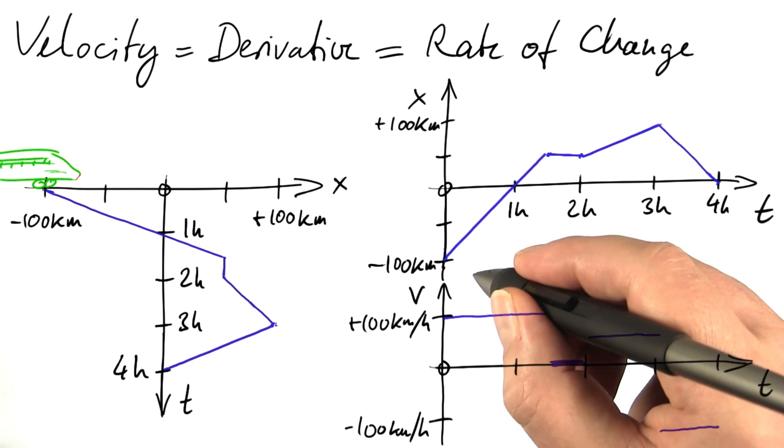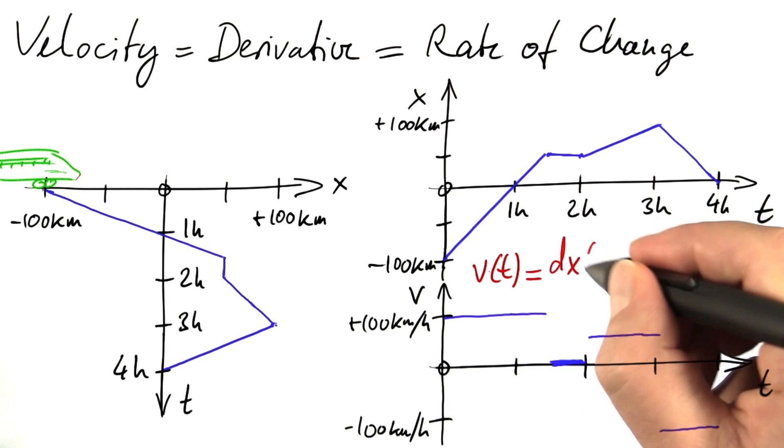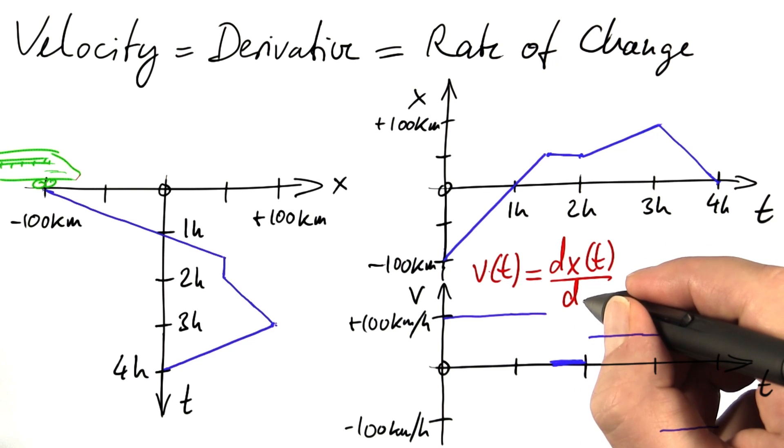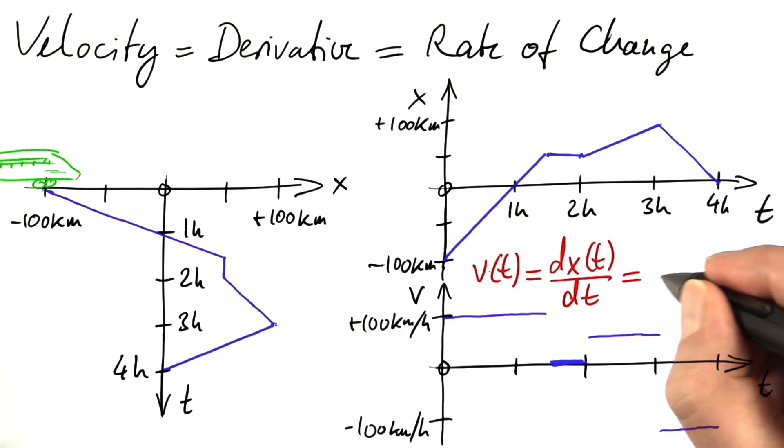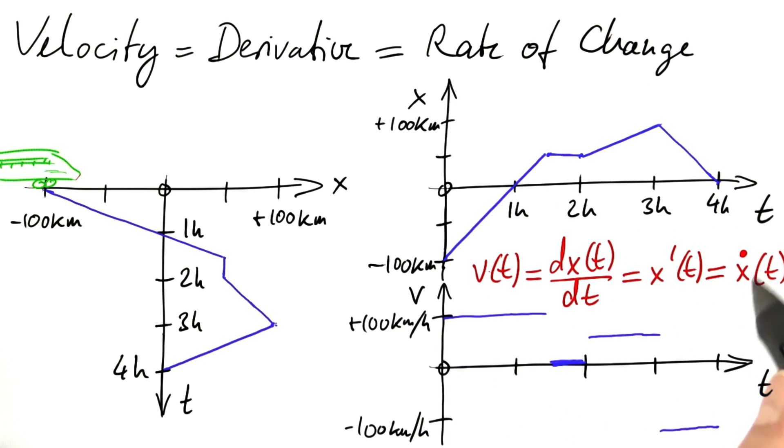There's tons of ways of writing that. V of t, the velocity depending on t. One way of writing it is dx of t by dt or x prime of t or, and this is what the physicists are using, x dot of t. I'm going to stick to that notation. Whenever physicists want to compute the rate of change with respect to time, they put a dot on top of that variable.